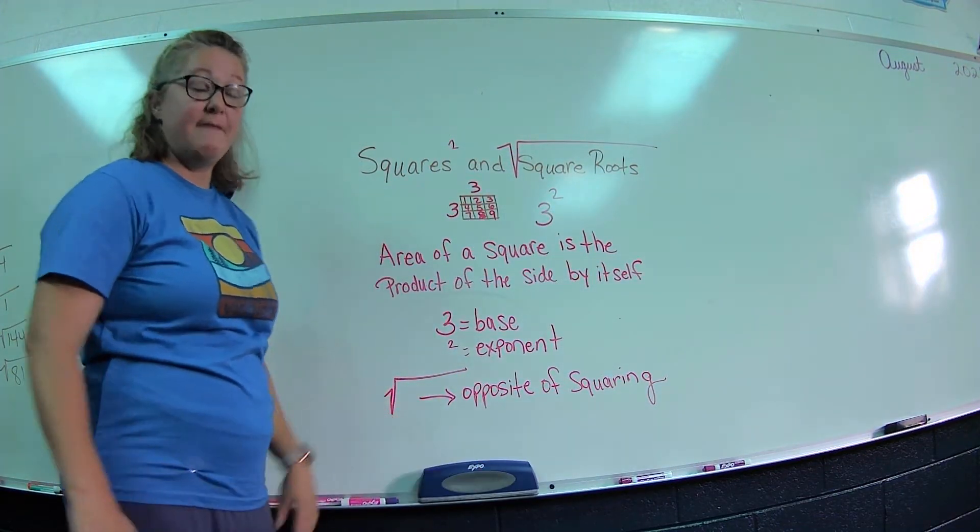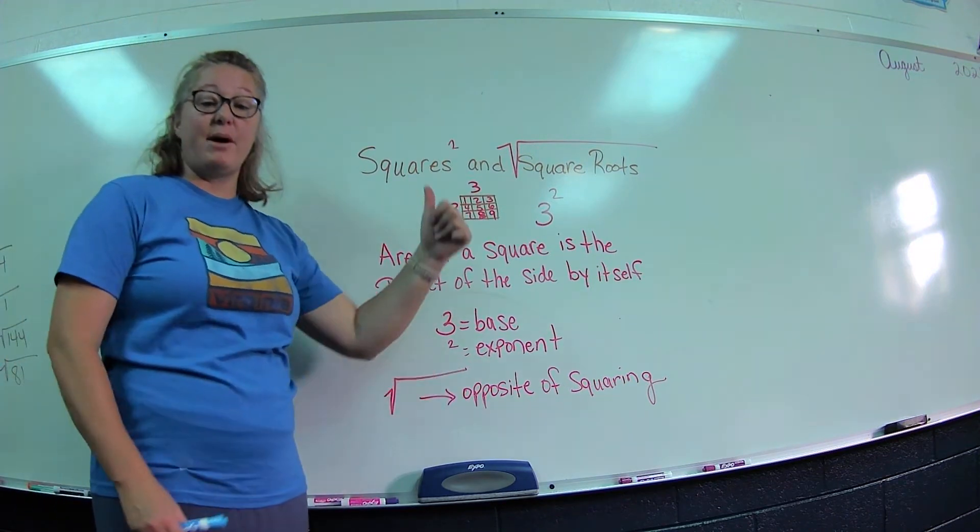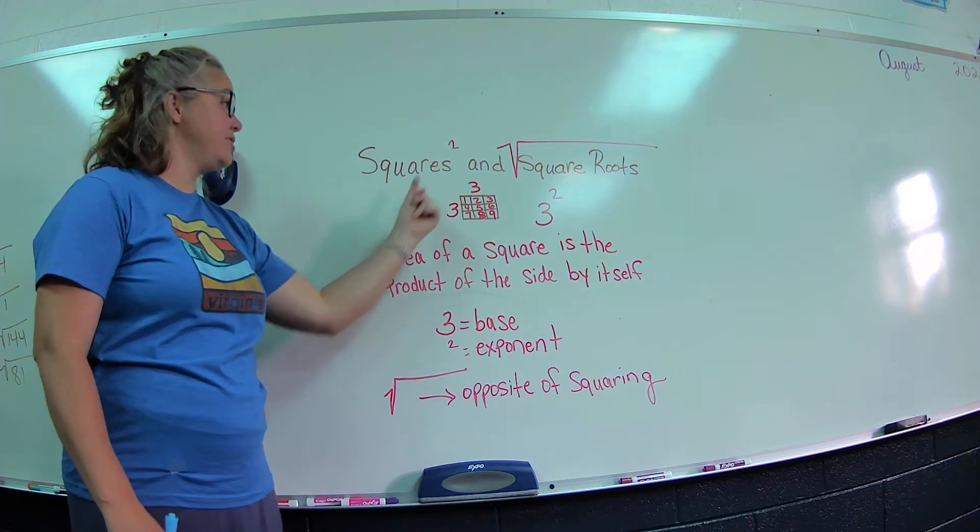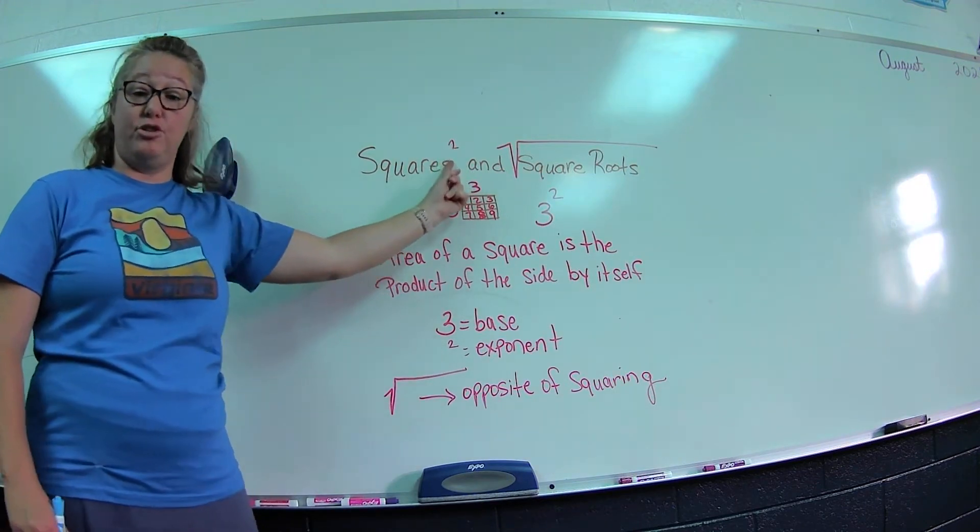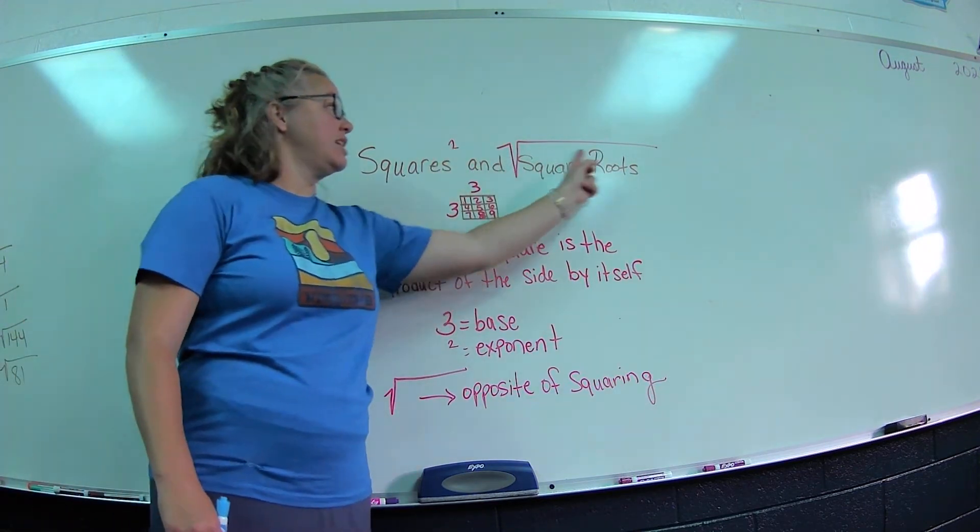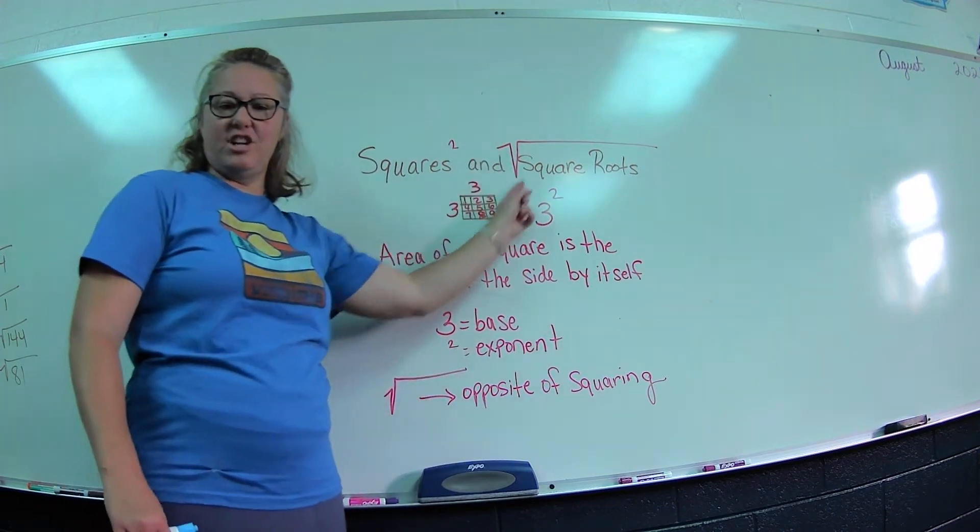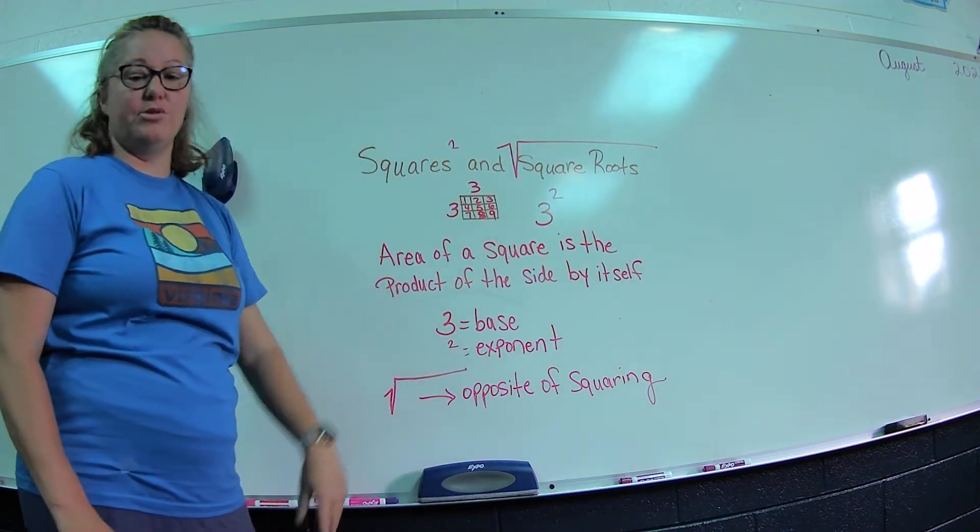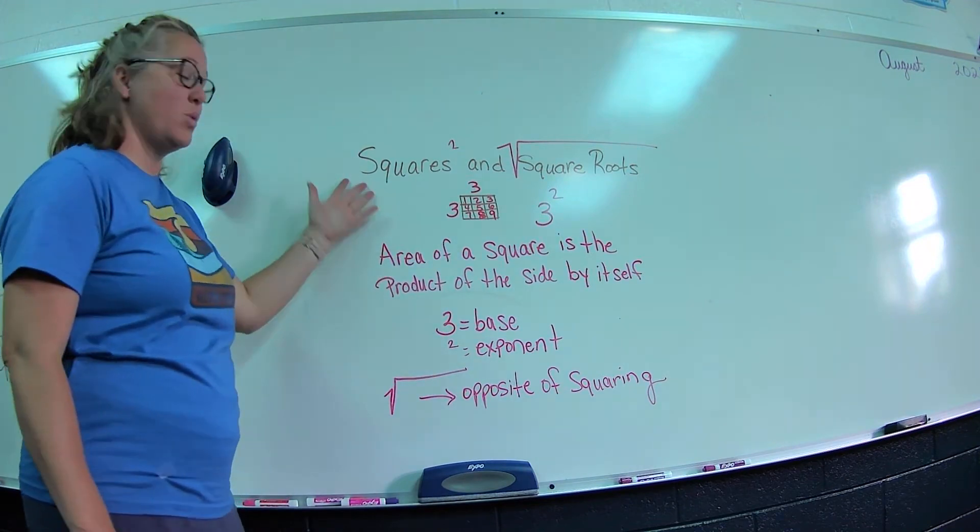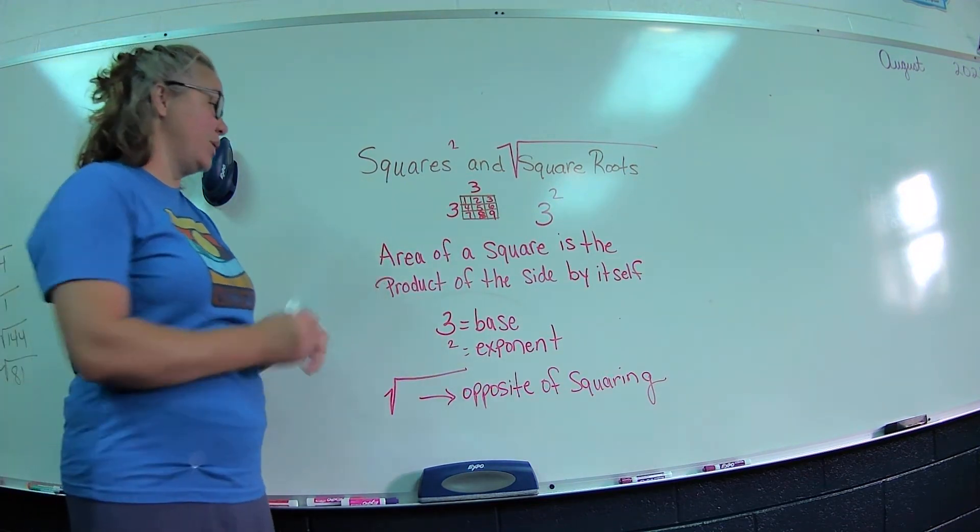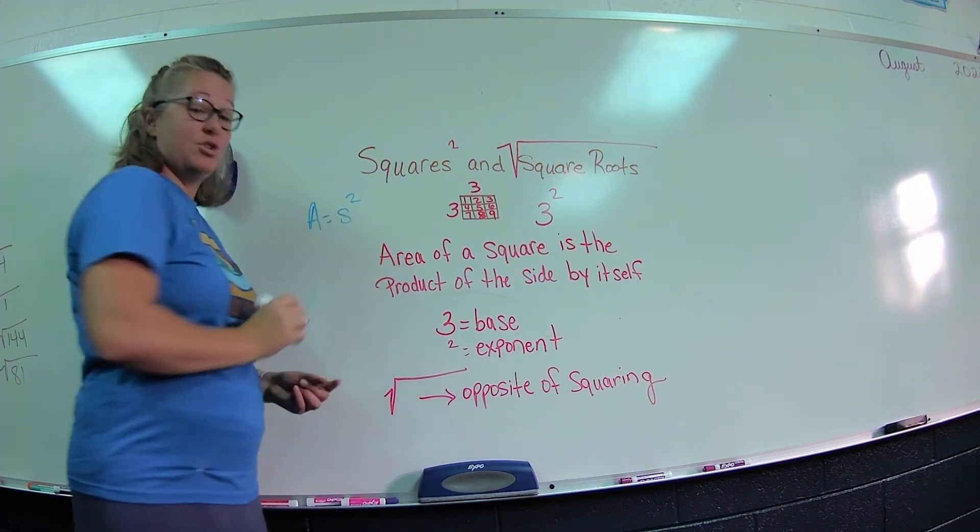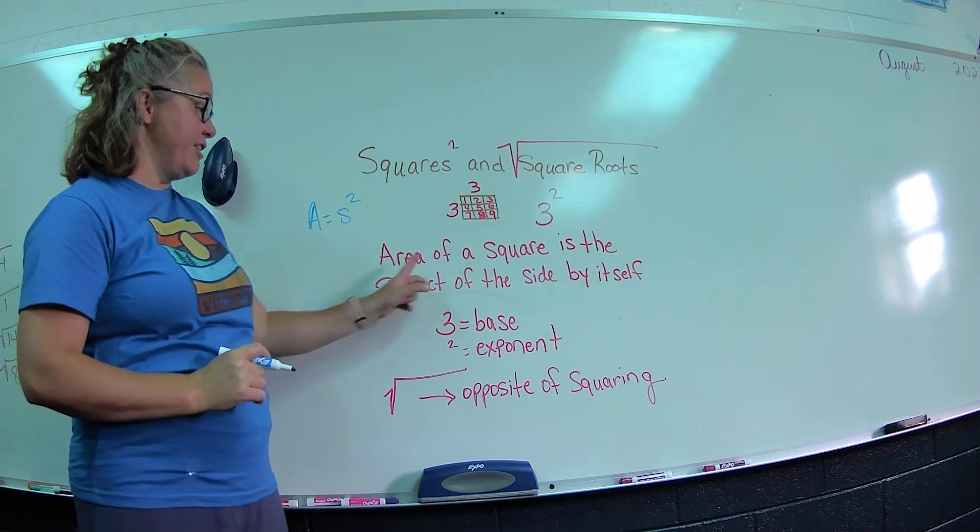So what are we doing today? We're going to talk about squares and square roots. Squares—you see this little exponent of 2. Square root—you'll see this, it looks like division but it starts with like a V. That means square roots. Well, let's talk about what is squares. The area of a square, we remember, equals side squared. This is the idea: the area of a square is the product of the side by itself.